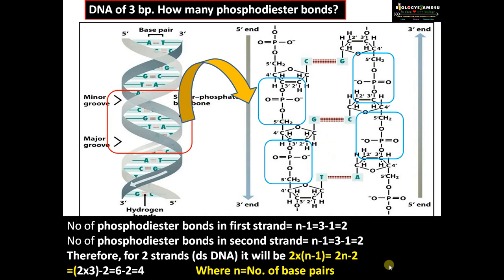This is how the equation is derived. Let us verify by substituting the values for 3 base pairs: 2 into 3 minus 2, that is 6 minus 2. The answer is 4, where n is the number of base pairs.